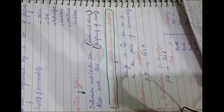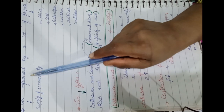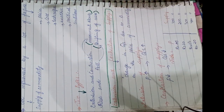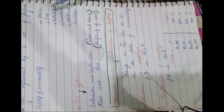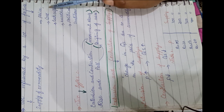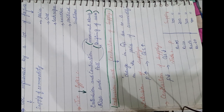In previous lectures we talked about the law of supply in detail, its assumptions and other things. Now we will move towards the next topic: what are the factors which may cause a change in supply? Supply of a commodity (SOC) is influenced by many factors — the first one is price, then cost of production, technique of production, weather conditions, political situation, and many other things.